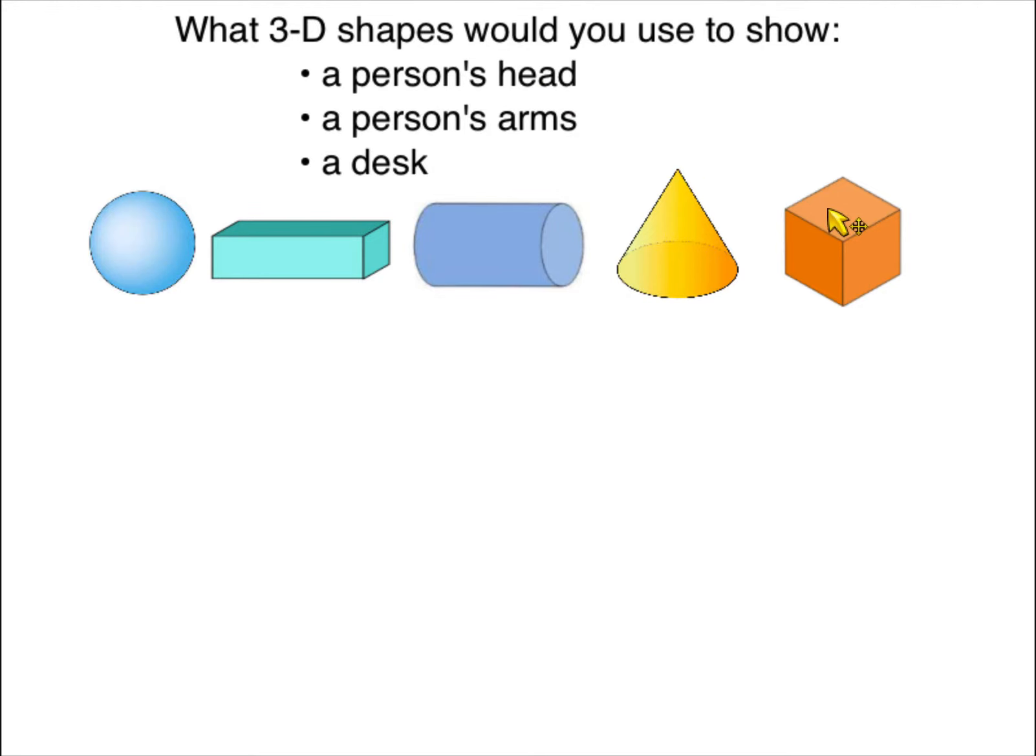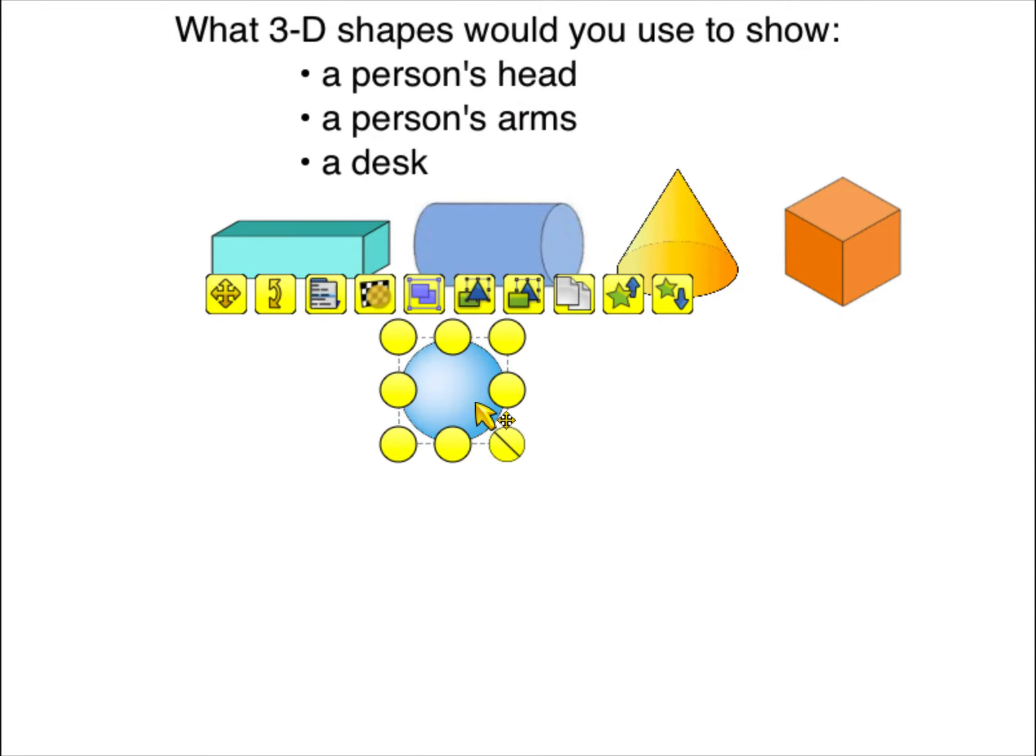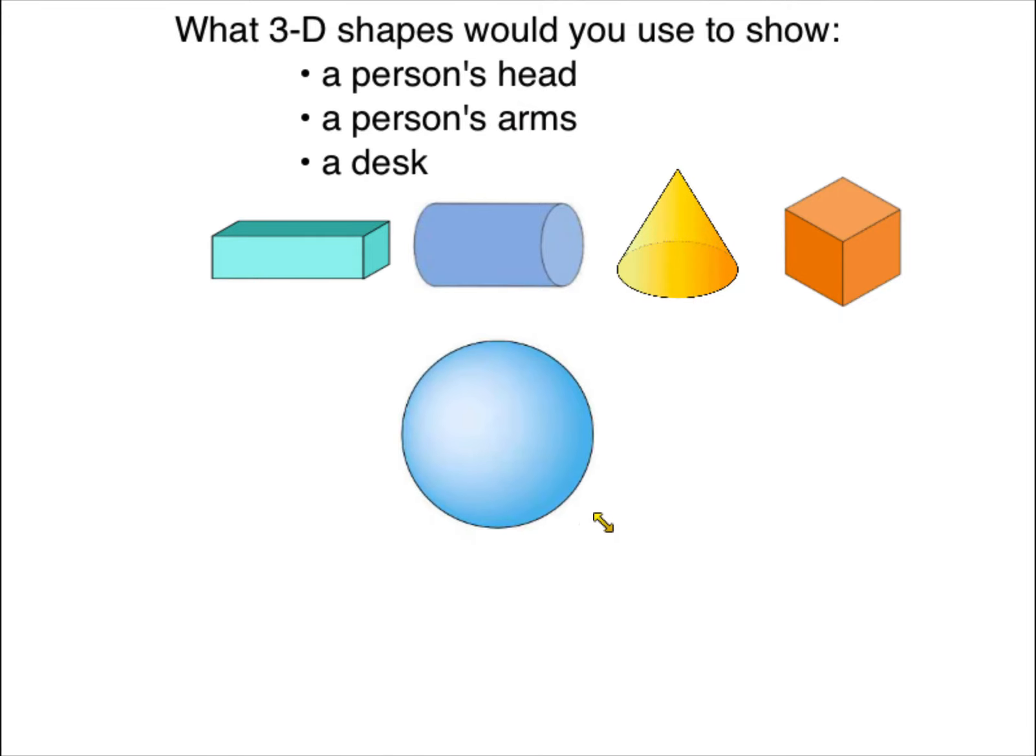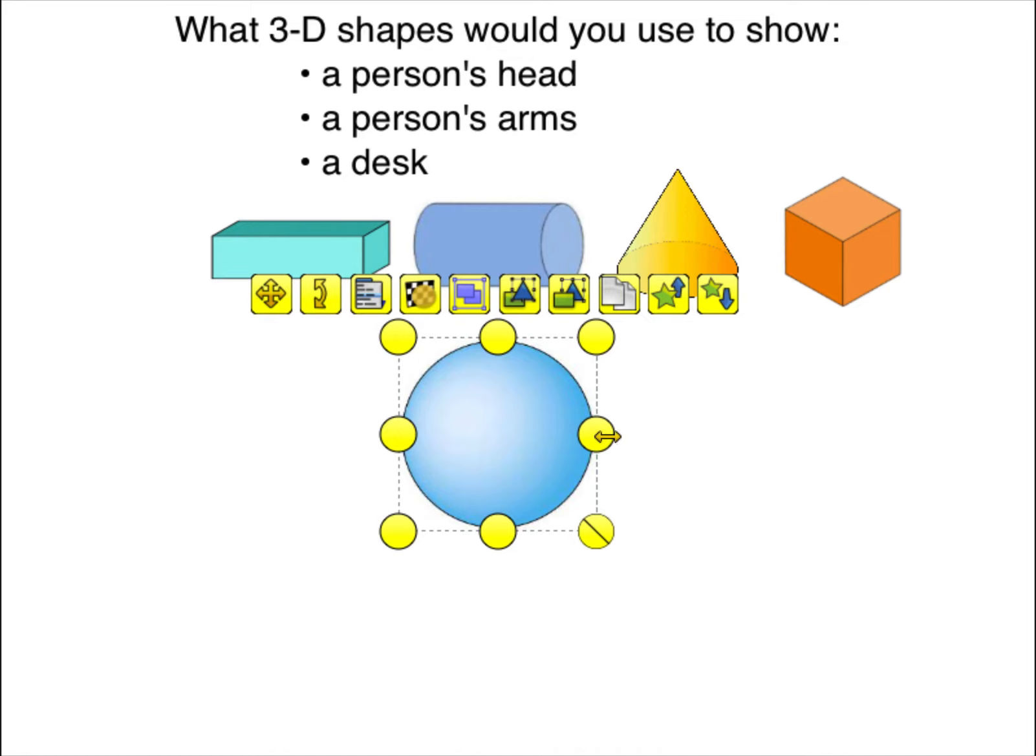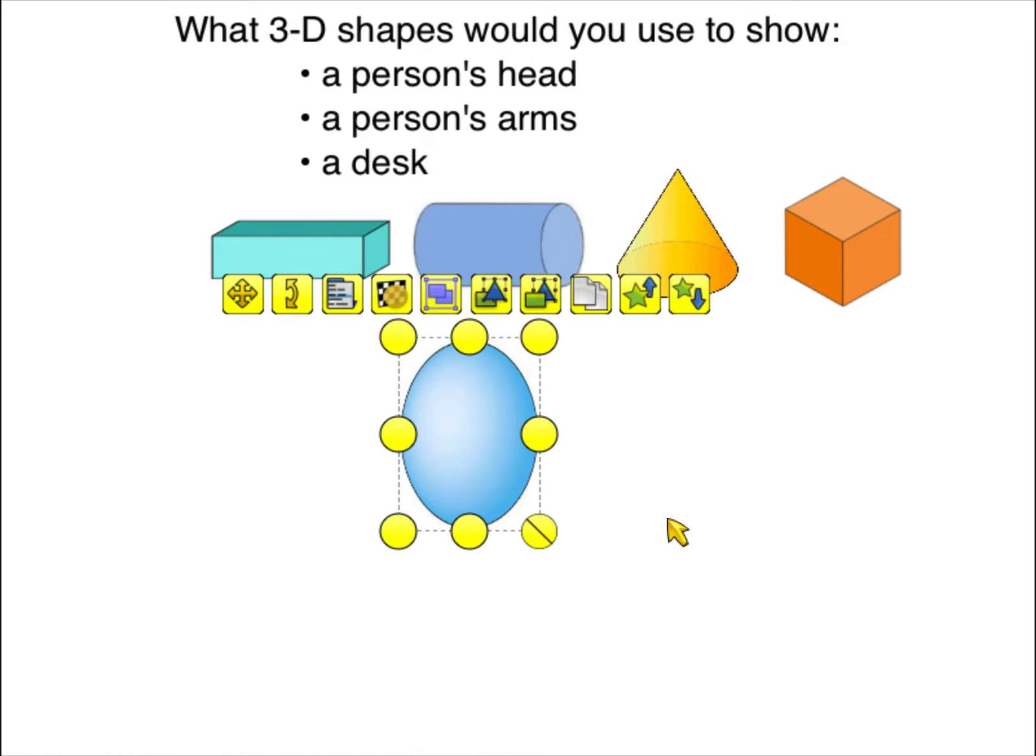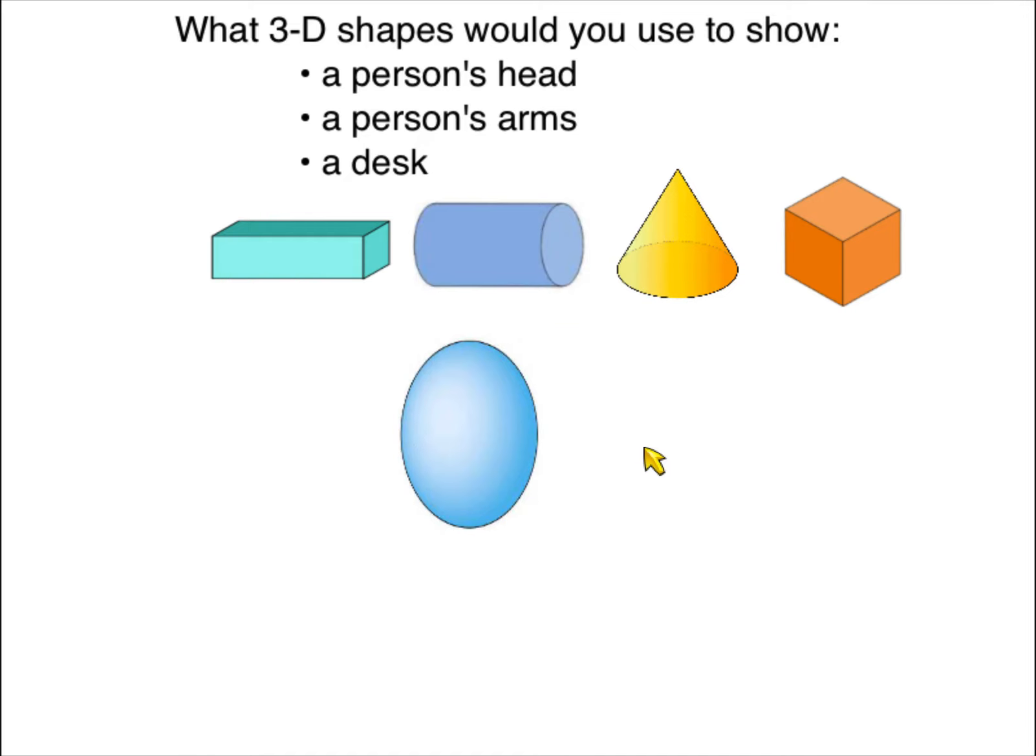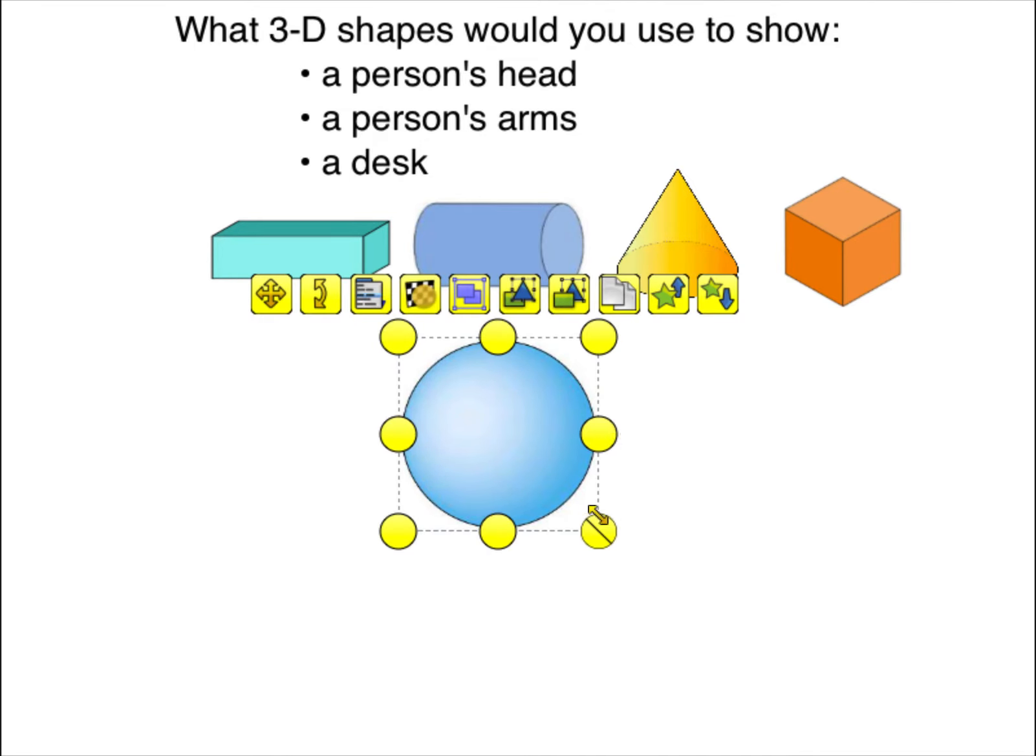So if you're going to look at these 3D shapes, which one looks most like a person's head? Well, I would probably use a sphere, even though I think a person's head looks more like an ovoid, and that's not a sphere, right, because it's not perfectly round. That's called an ovoid, but that's not one of our choices. So I would say it looks most like a sphere.